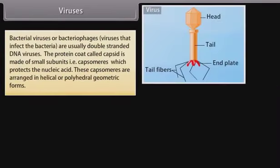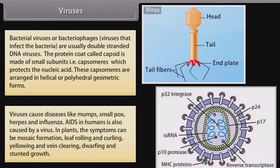Bacterial viruses, or bacteriophages, are usually double-stranded DNA viruses. The protein coat, called the capsid, is made of small subunits called capsomeres, which protect the nucleic acid. These capsomeres are arranged in helical or polyhedral geometric forms. Viruses cause diseases like mumps, smallpox, herpes, and influenza. AIDS in humans is also caused by a virus.